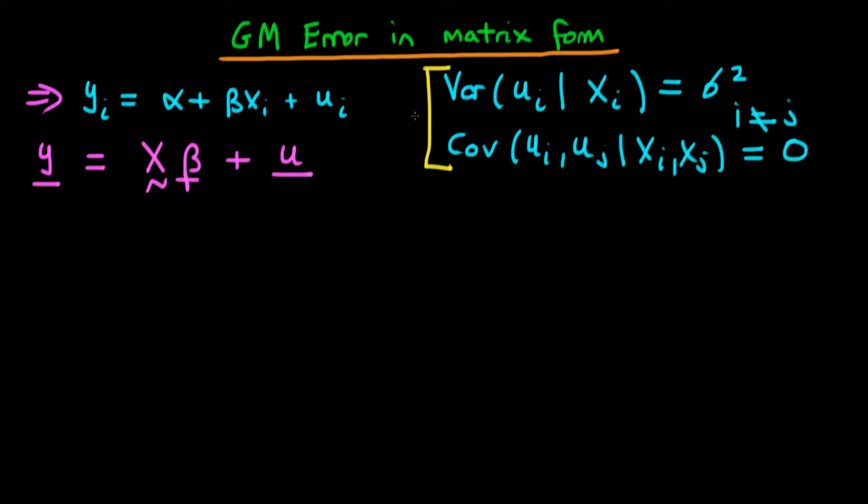How can we represent these two conditions in this particular formulation? First I'm going to come up with an expression for the variance of our error term, the variance of u given that we have all of our independent variables X. We've already explained how to evaluate the variance of a random vector.